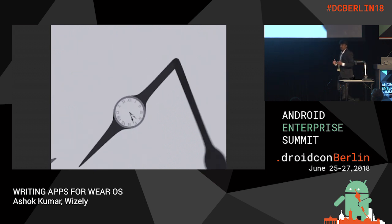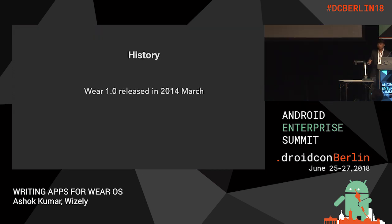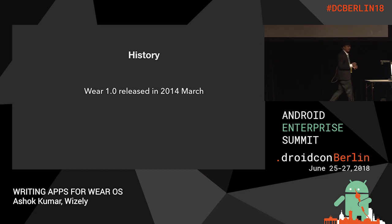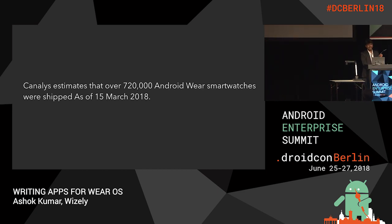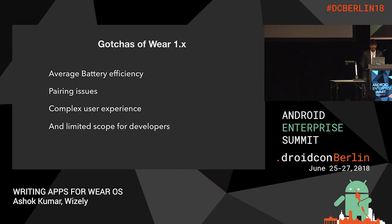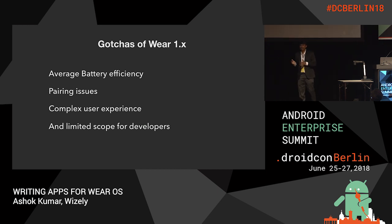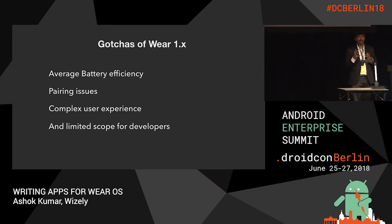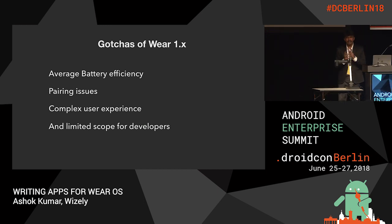If we go back in time, Wear 1.5 was released in March 2014, targeting platform Jelly Bean 4.3 and 4.4 KitKat and later. But it had a lot of gotchas. Recent analysis says 720,000 Android Wear smartwatches were shipped as of March 15, 2018. The gotchas of Wear 1.x were no battery efficiency, issues over the network layer, Bluetooth pairing issues, and complex user experience.